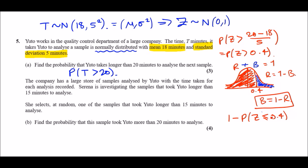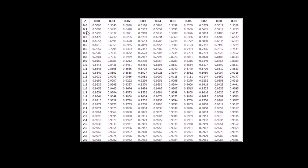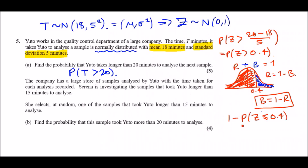Now look up 0.40 in the Z-table, which gives 0.6554. So the answer is 1 minus 0.6554, which gives 0.3446. A quick shortcut: if it's greater-than, just do one minus and switch the sign — it's identical.